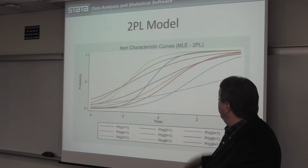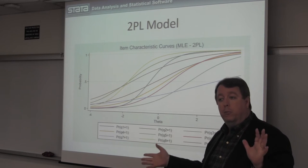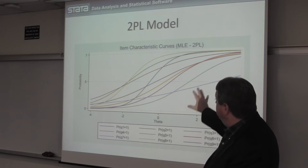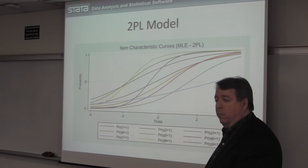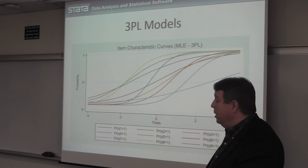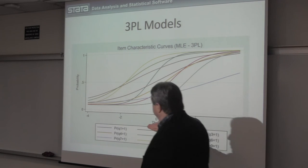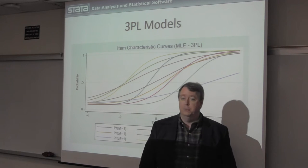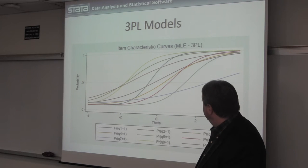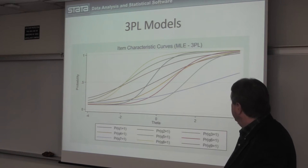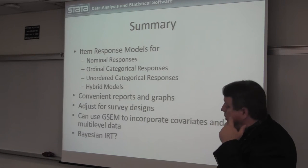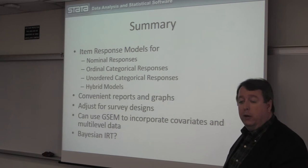We can also fit a two-parameter logistic model, which frees up the slope parameters so we estimate a separate slope for each item — you often get a graph that looks like a bowl of multicolored spaghetti. We can also fit a three-parameter logistic model that allows for guessing. The guessing parameter lifts up the lower asymptote, because the probability of someone answering correctly goes up slightly since some people are just guessing.